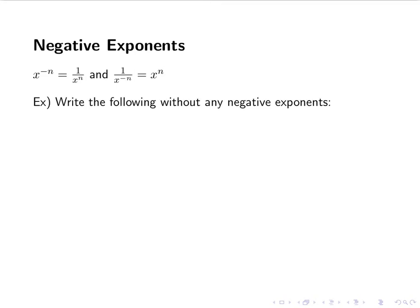So we're going to write the following without any negative exponents. For a, we have y to the negative 2 — we have a negative exponent, so we're going to use this rule and bring it down into the denominator: 1 over y squared. Our negative exponent then becomes positive.